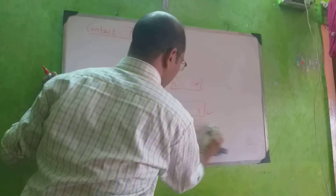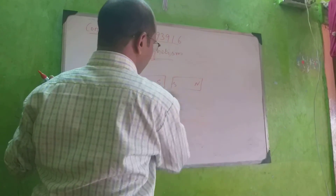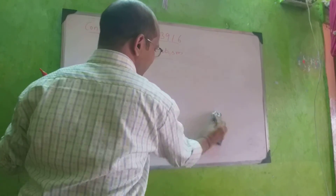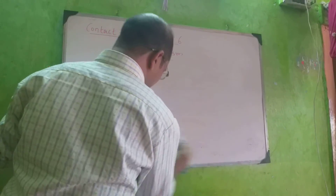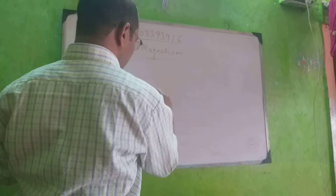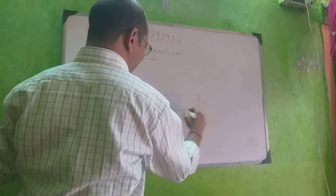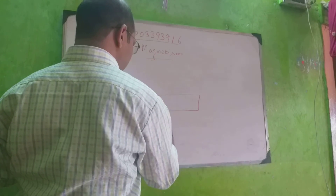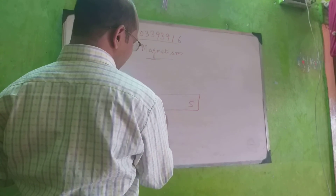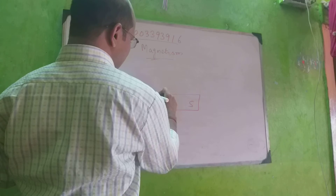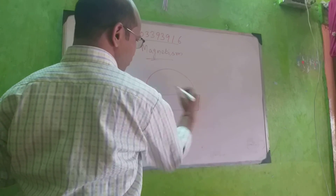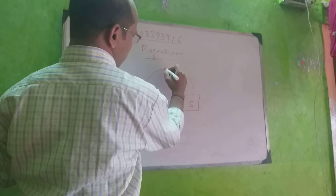The fourth thing I want to tell you is that in a magnet there are magnetic lines. There is a magnet with north pole and south pole. Magnetic lines of a magnet arise from the north pole and go towards the south pole.